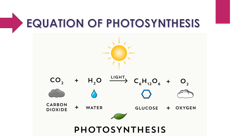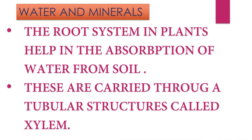Equation of photosynthesis: carbon dioxide plus water, in the presence of sunlight and chlorophyll, gives us glucose and oxygen. Let us learn about each element in detail. The root system in plants helps in the absorption of water from soil, which is carried through tubular structures called xylem.